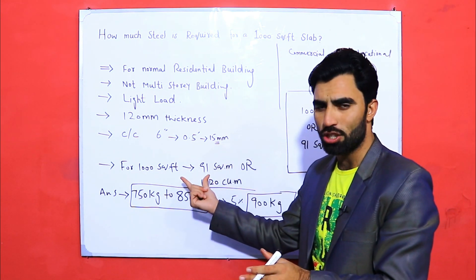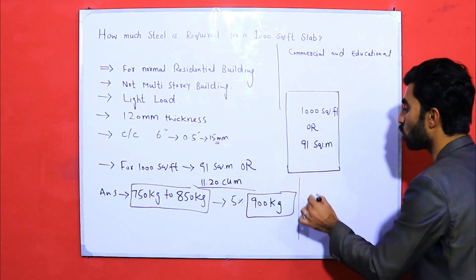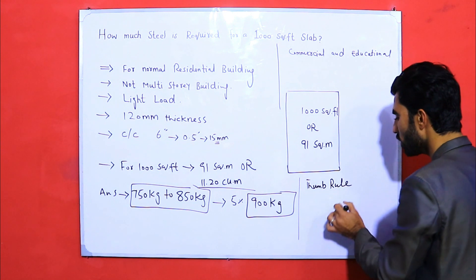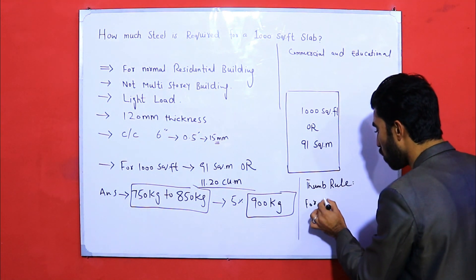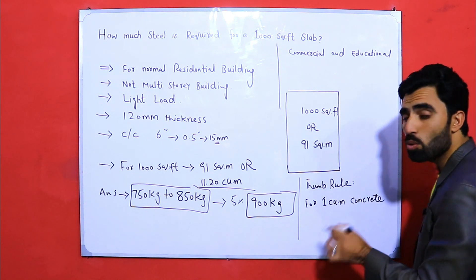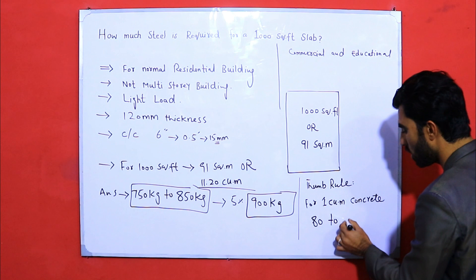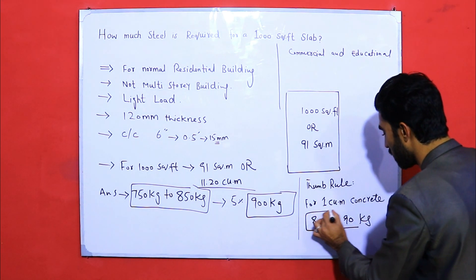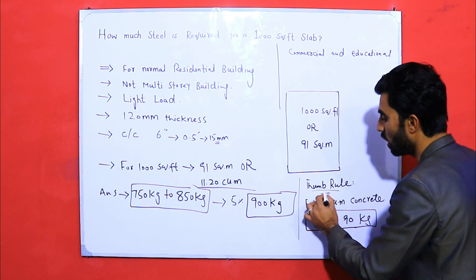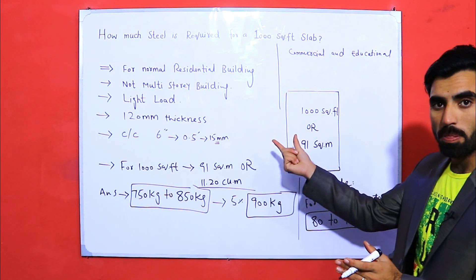Also note: by thumb rule — also called the blind method — for one cubic meter of concrete, we require from 80 to 90 kg of steel. This is another useful reference point, but I recommend it only as a quick estimate.